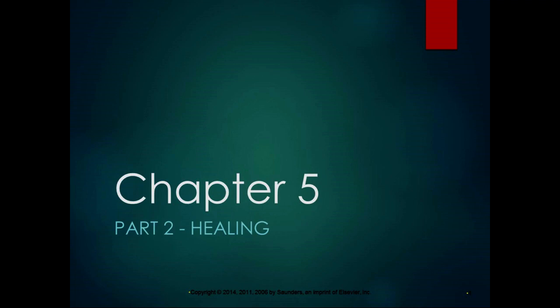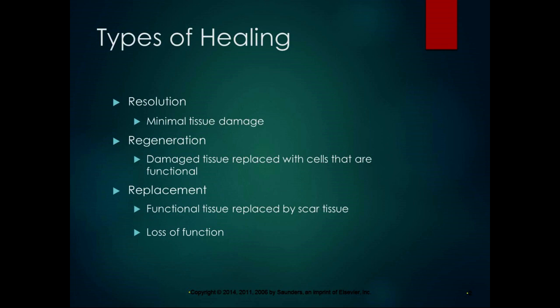In the first part of chapter five we talked about inflammation, and one of the signs of inflammation we discussed was the increase of fibrinogen and prothrombin, which are part of the clot process. That actually starts to get into the healing process. Once you have a wound that has to heal, healing can happen in a lot of different ways, and a lot of times it has to do with what type of wound it is, how much tissue damage there is, and the type of resolution we get.